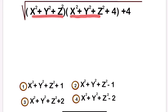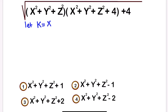We can see that these parts are similar. So to solve this question, we can let k be equal to x squared plus y squared plus z squared.